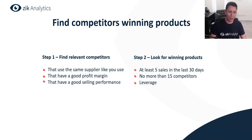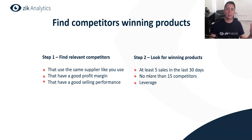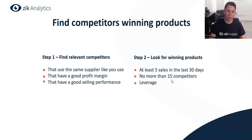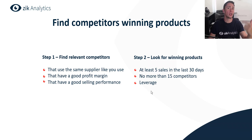Once you find good competitors, move to step two: look for winning products. You want to find products with at least five sales in the last 30 days — for regular products it's five, for traffic products it's 10, 15, 20, etc. No more than 15 competitors, though if you're just starting I'd suggest no more than five. You also want leverage: list them with a better price, better title, better pictures, better shipping, return policies, and better listings in general.